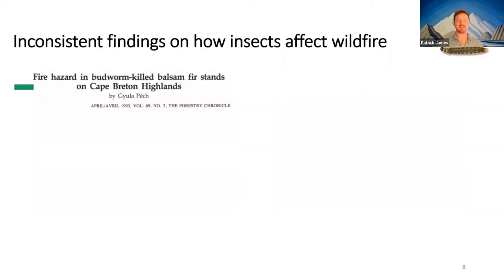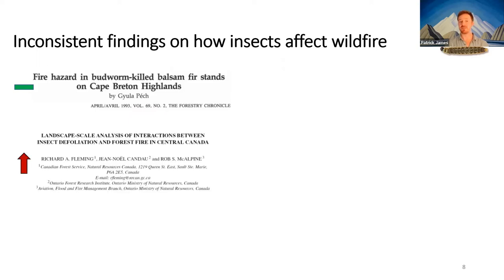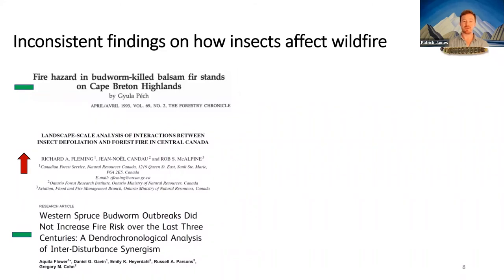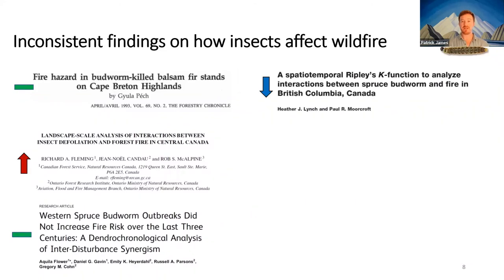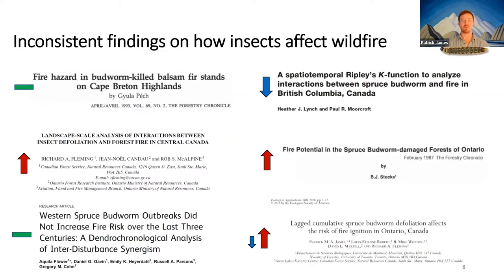There's a huge range of inconsistent findings on how insects affect wildfire. Looking at spruce budworm: work in Cape Breton Highlands found no influence on fire hazard; Rich Fleming with CFS Ontario found a significant interaction; looking at western spruce budworm, there was no effect using a dendrochronological approach; Heather Lynch and Paul Moorcroft found a decrease in fire risk following insect outbreak; Brian Stocks in Ontario found an increase; and in some work we did, we found both an increase and a decrease depending on the temporal scale examined.